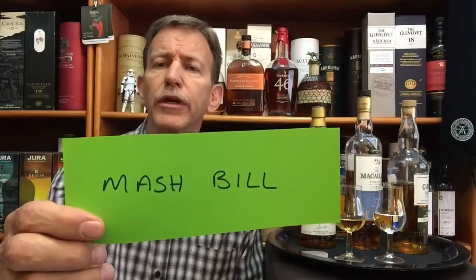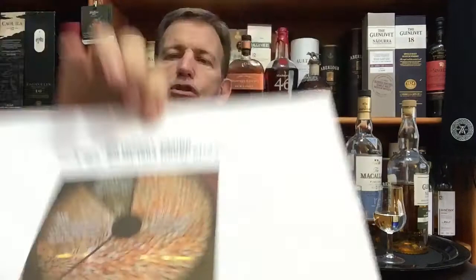You might have heard the term mash bill. What is a mash bill? A mash bill is the mix of grains used to make a specific whiskey. This one here is around 80% corn, and the rest is made up of rye and malted barley — that is a typical mash bill for Kentucky bourbon. The mash bill for a single malt will be 100% barley.